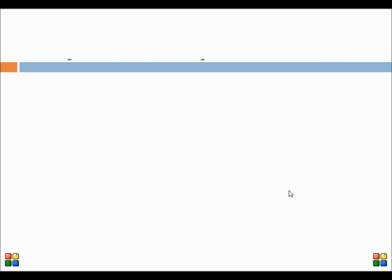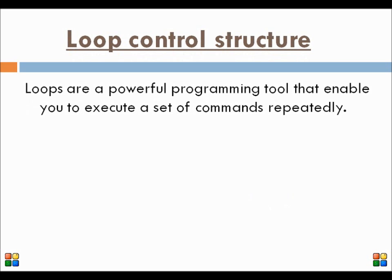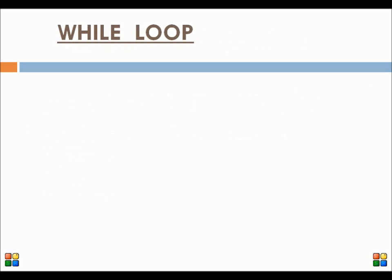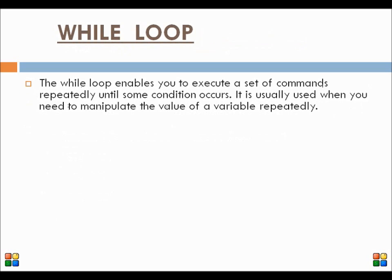The next topic is loop control structures. A loop control structure is basically a powerful programming tool that enables you to execute a set of commands repeatedly. The different loop structures in shell are: while loop, until loop, select loop, and for loop. In a while loop, it enables you to execute a set of commands repeatedly until some condition occurs. It is usually used when you need to manipulate the value of a variable repeatedly.